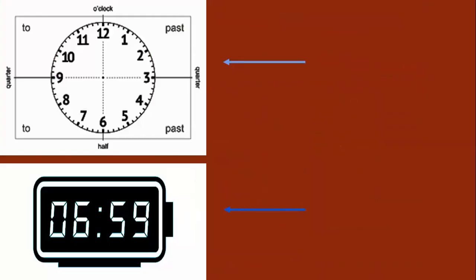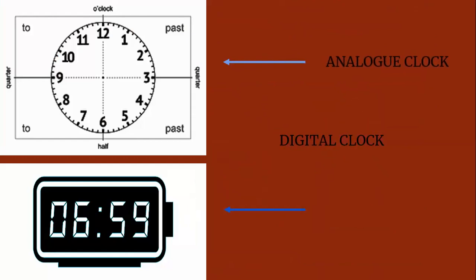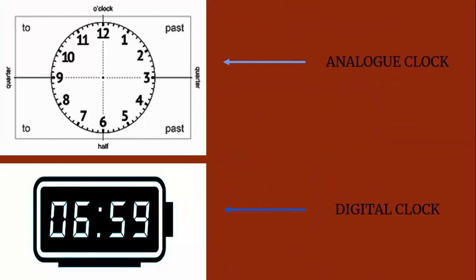There are two types of clocks that we use regularly. They are the analog clock and the digital clock.